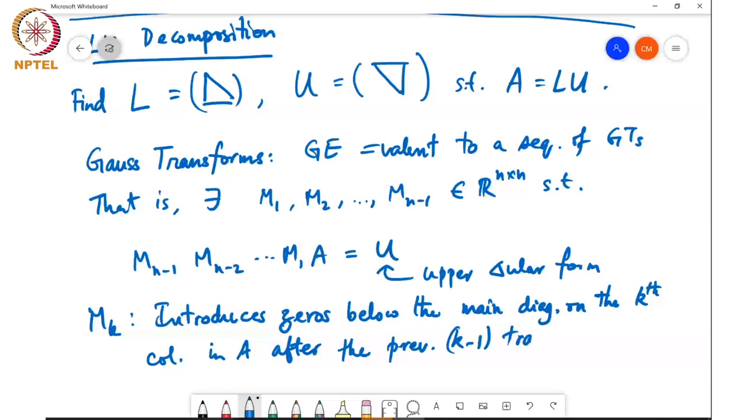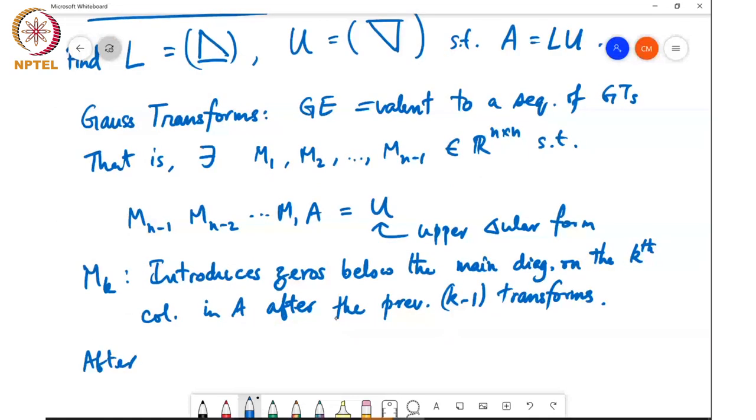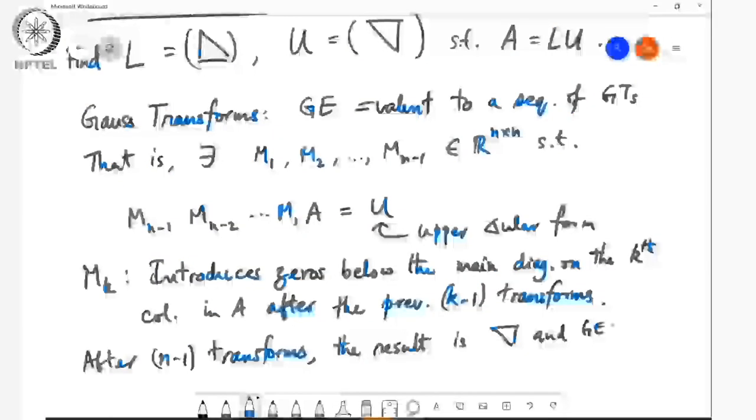So the first transform M1 will introduce zeros below the first column of A. The second M2 M1 A will have zeros below the main diagonal of the first two columns of A and so on. So after n minus 1 transforms the result is upper triangular and Gaussian elimination is complete. Okay so the thing that we need to understand next is what is the structure of Mk. So this is something I will discuss in the next class. We will stop here for today.